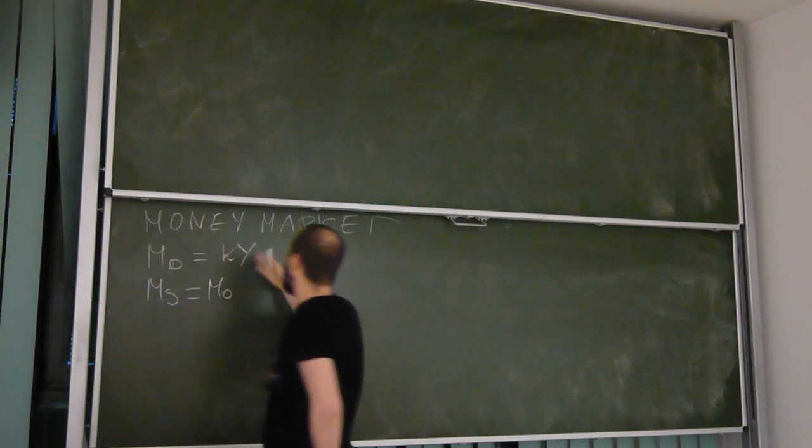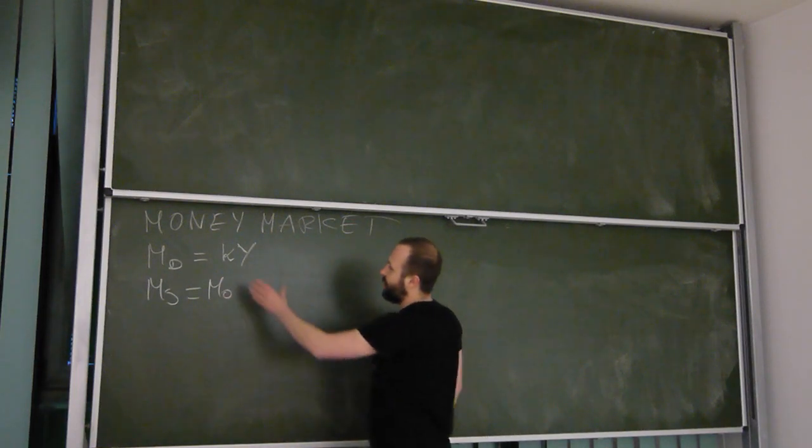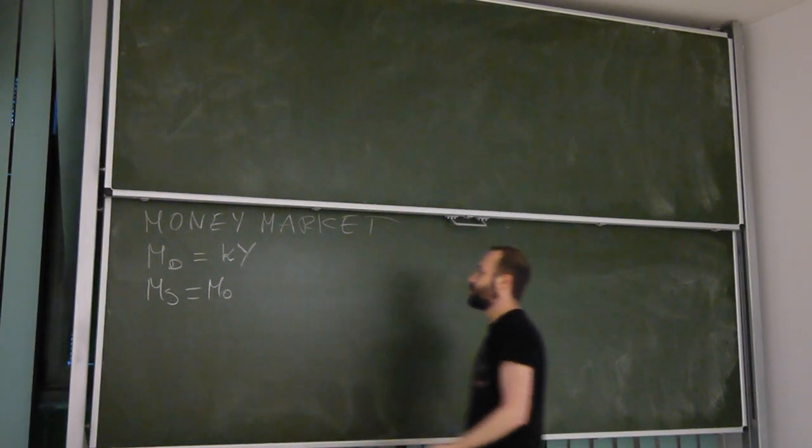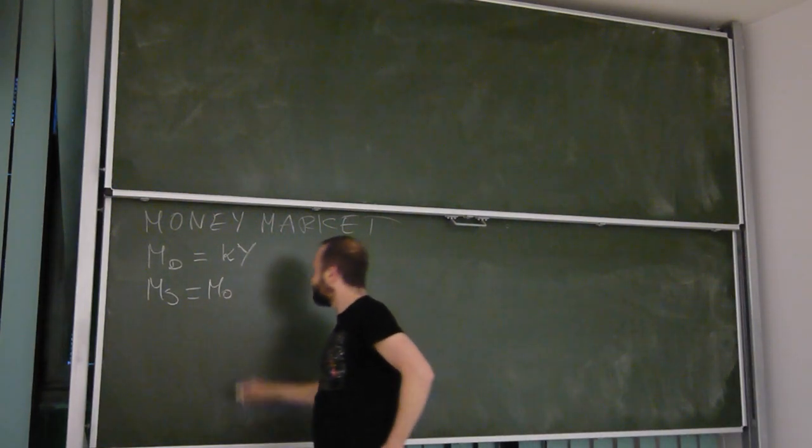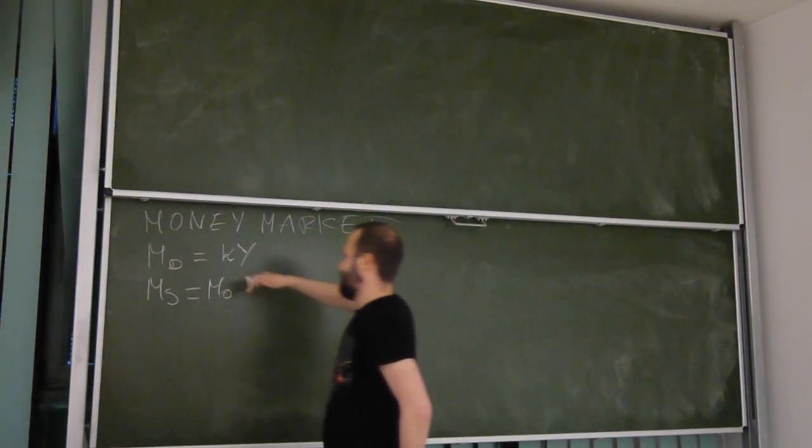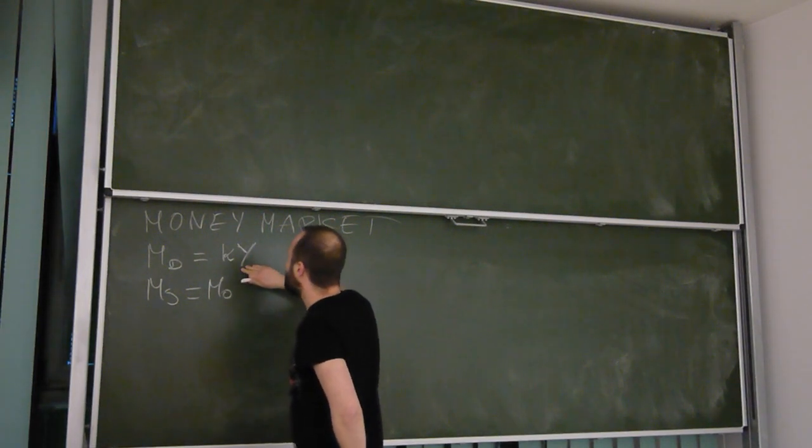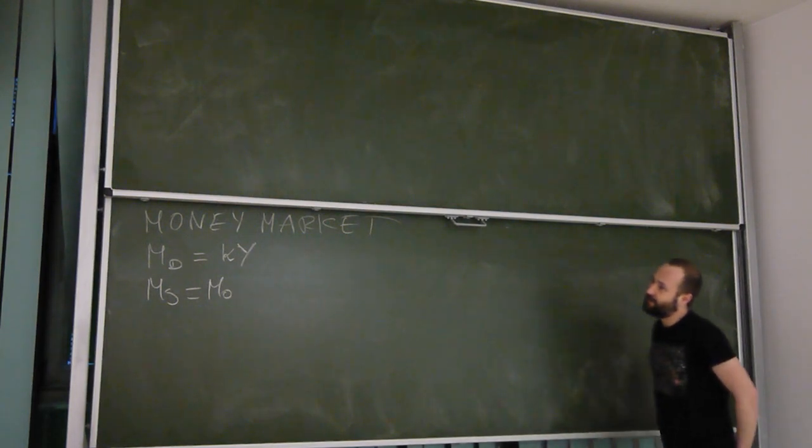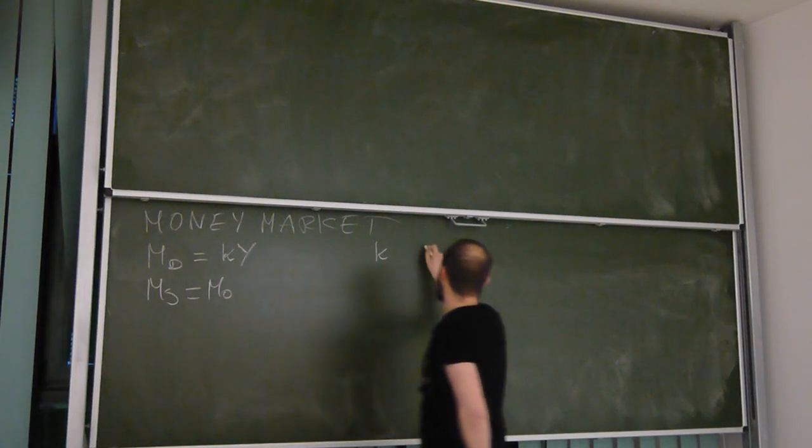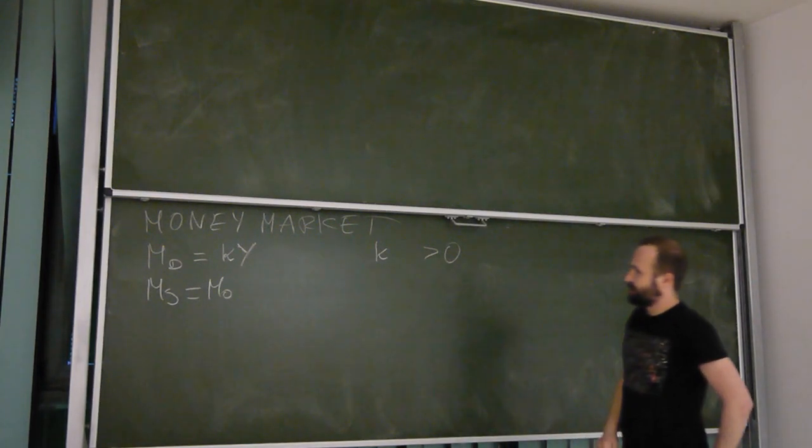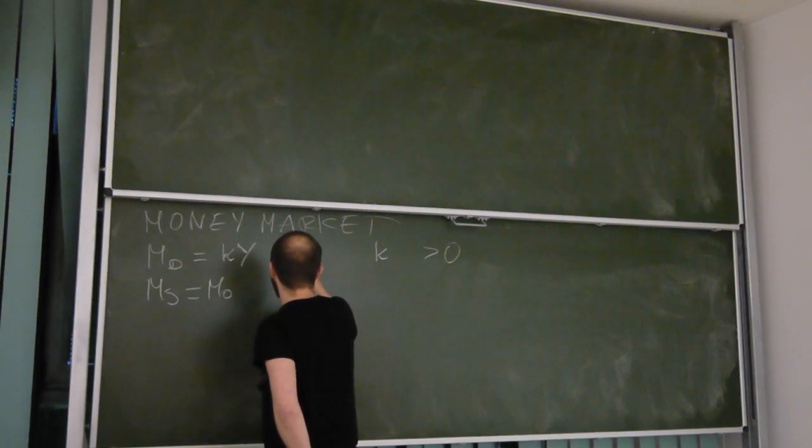Then money demand, like you learned in macroeconomics, depends mainly on two things. First one is the GDP or income. Generally, if we produce more goods, we need to have more money in order just to purchase them. You can also look at it from the income side - the bigger is the income of everyone, the more we need to have to pay them. Doesn't matter how we look at it, from the perspective of transaction or income, definitely money demand should be positively related to the level of GDP. So we can include K times Y, where K should be positive.